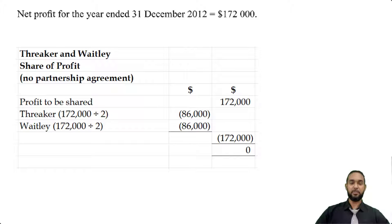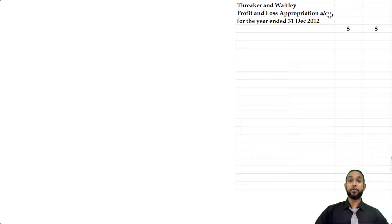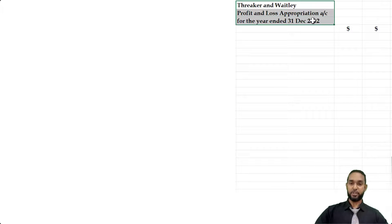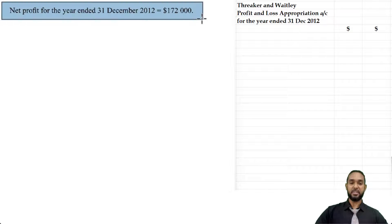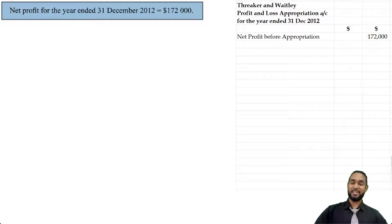With Part C out of the way, let's get Part A going. Be sure to head up your appropriation account or any statement properly: name of the entity, name of the statement, and the period to which it applies. The first item that goes in the appropriation account is of course the net profit of the entity for the year under review — in this case that's $172,000.